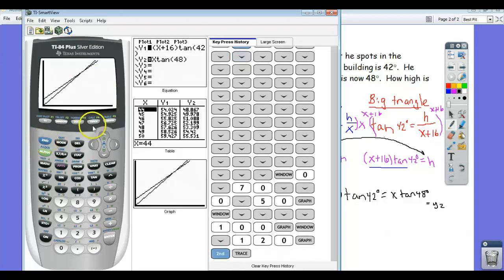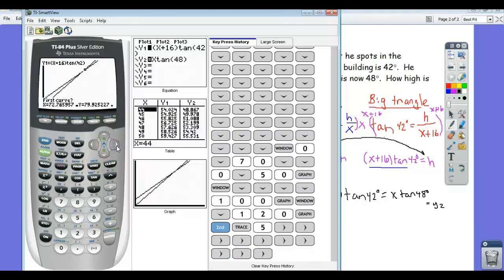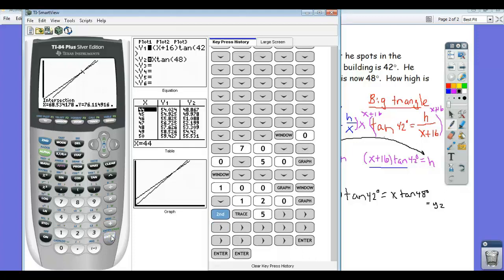So, we're going to calculate the intersection. So, first curve, second curve, enter. So it looks like x equals 68.53.